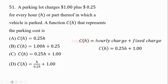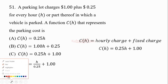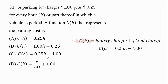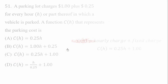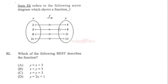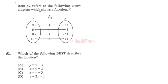Therefore the correct answer is option C. Now the 52nd question — item 52 refers to the following arrow diagram which shows a function F.